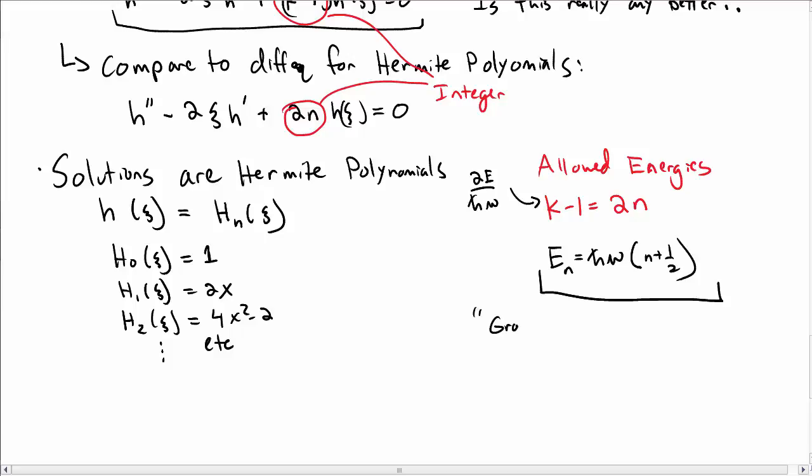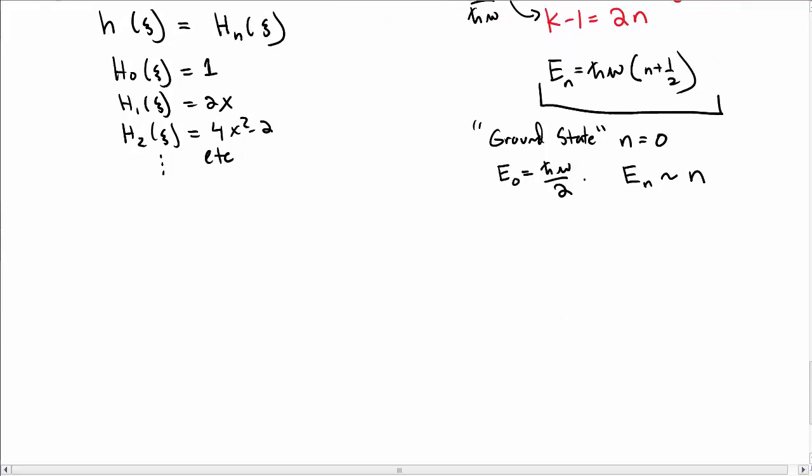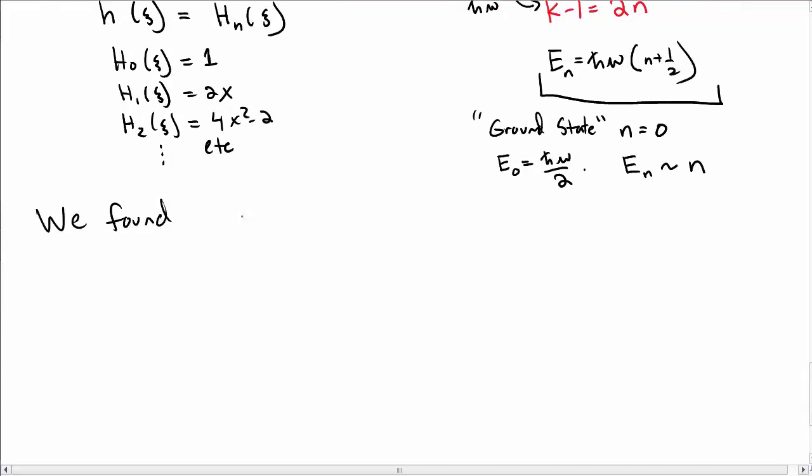This also tells us that the ground state is n = 0 for the harmonic oscillator. So E₀ is ℏω/2, and then the higher energy levels E_n go like n instead of n² as they did for the infinite square well.